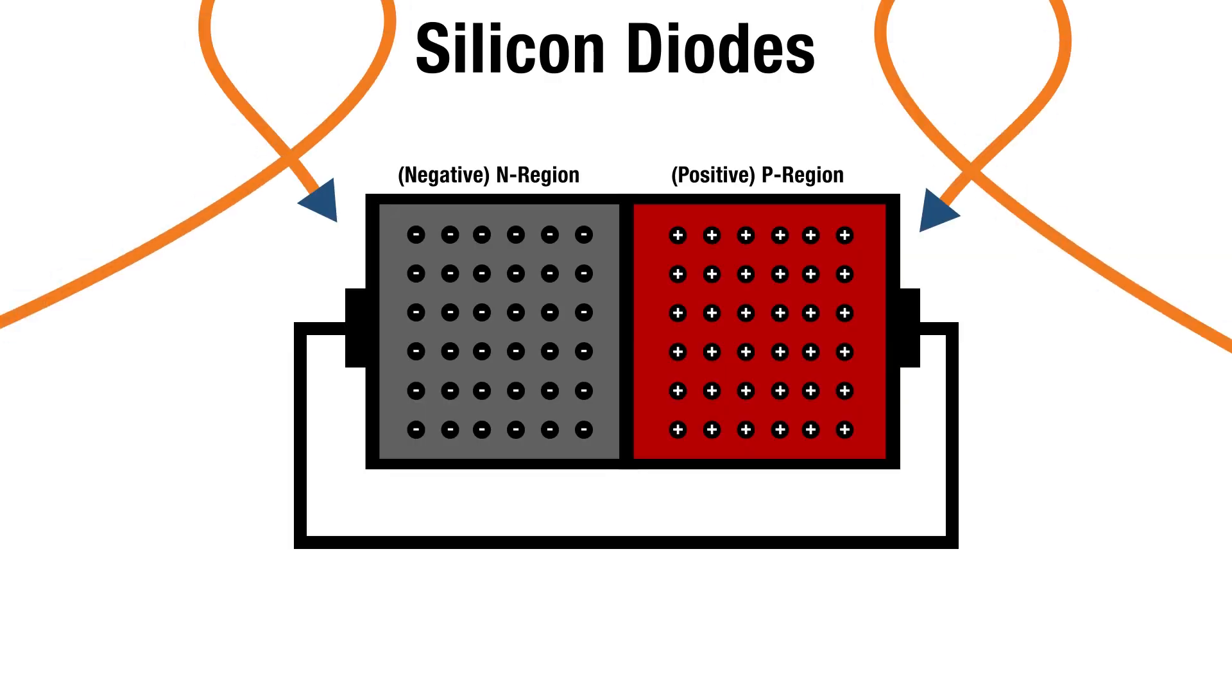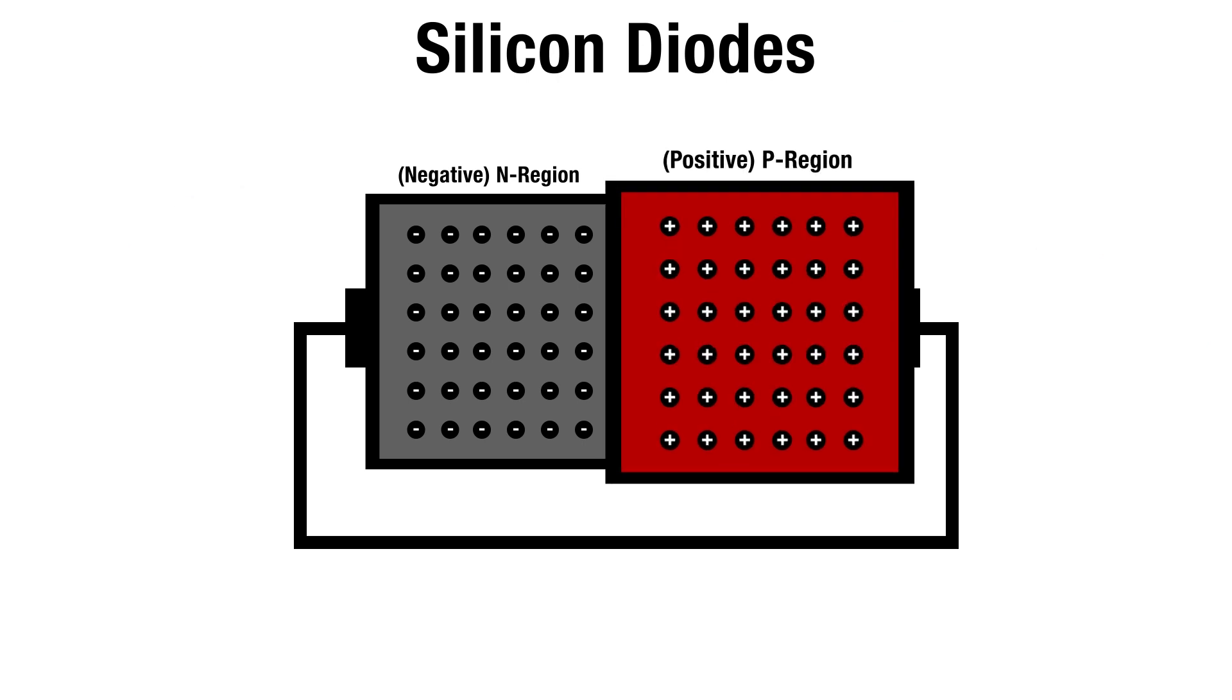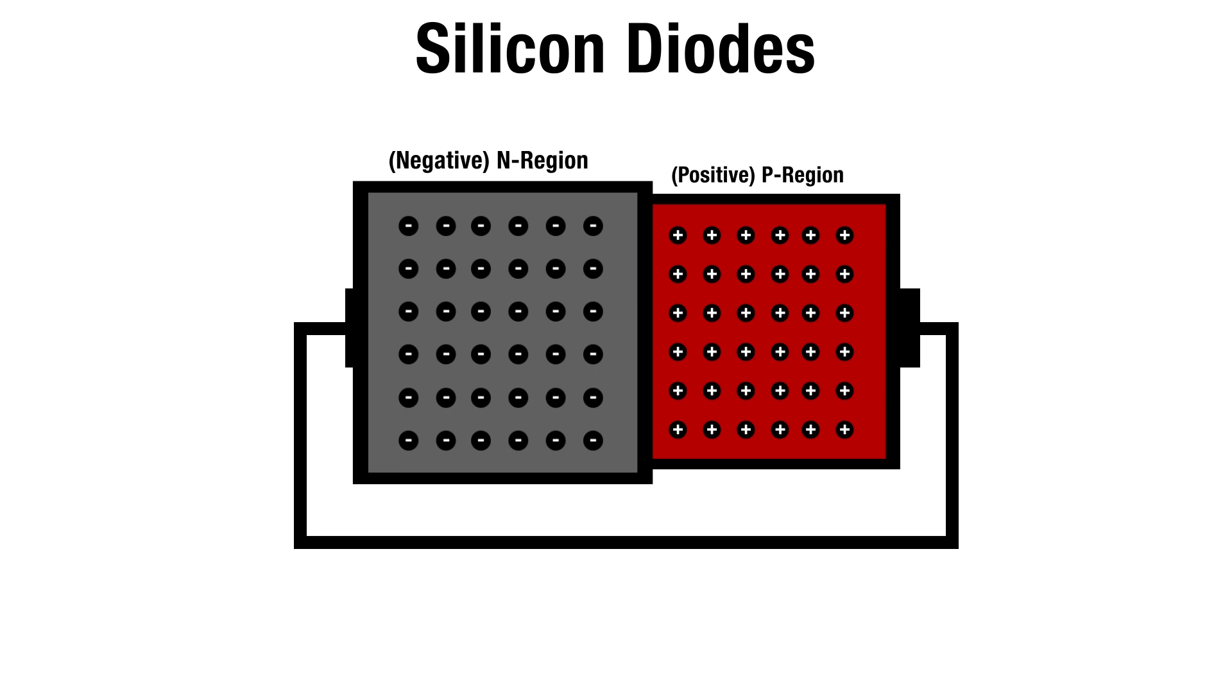Silicon diodes have two elements added to them, making two regions. The p-type region with positive charge carriers, and the n-type region with negative charge carriers.